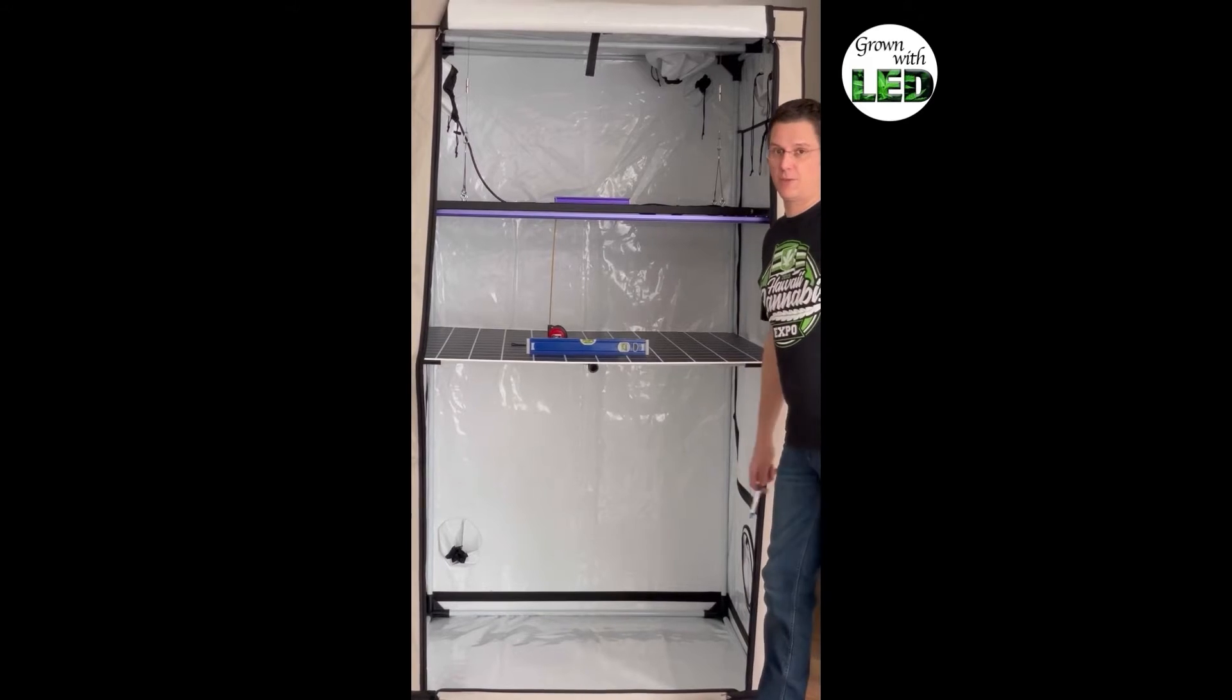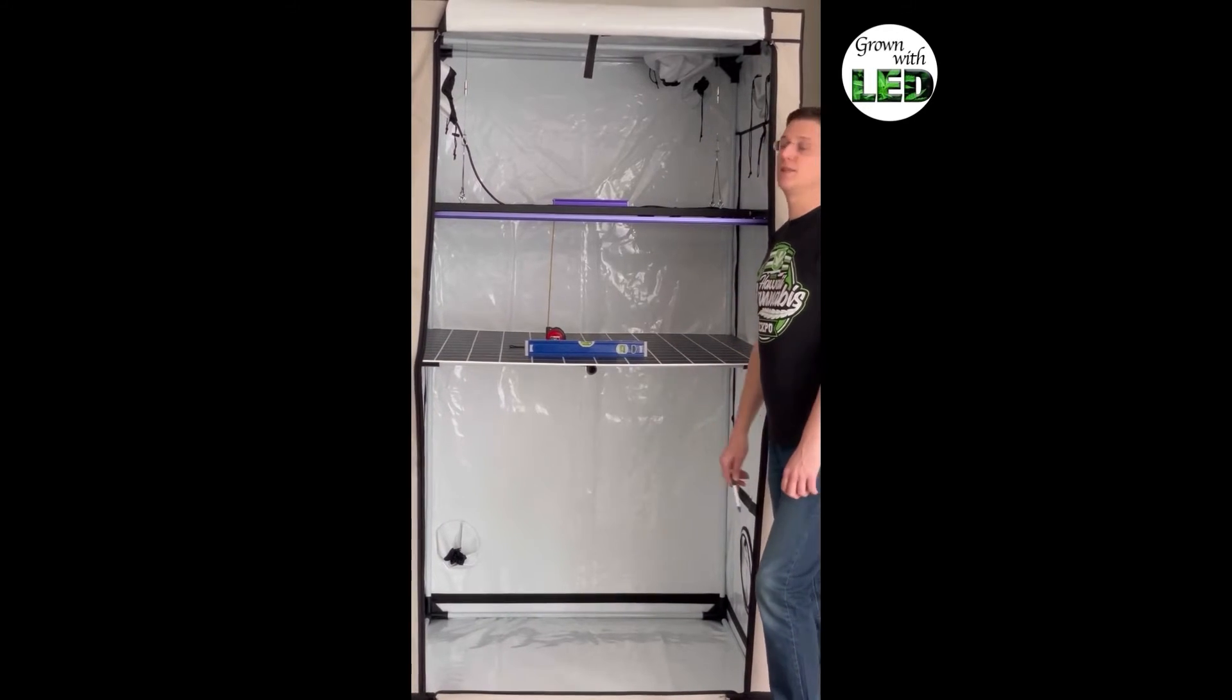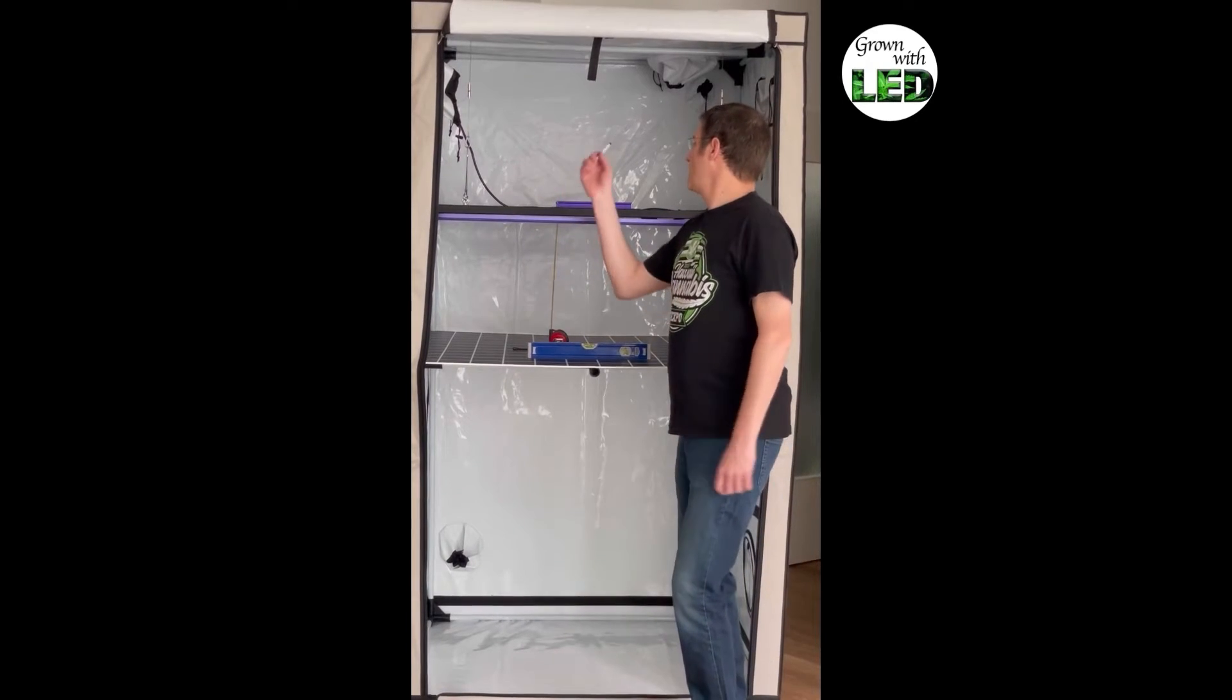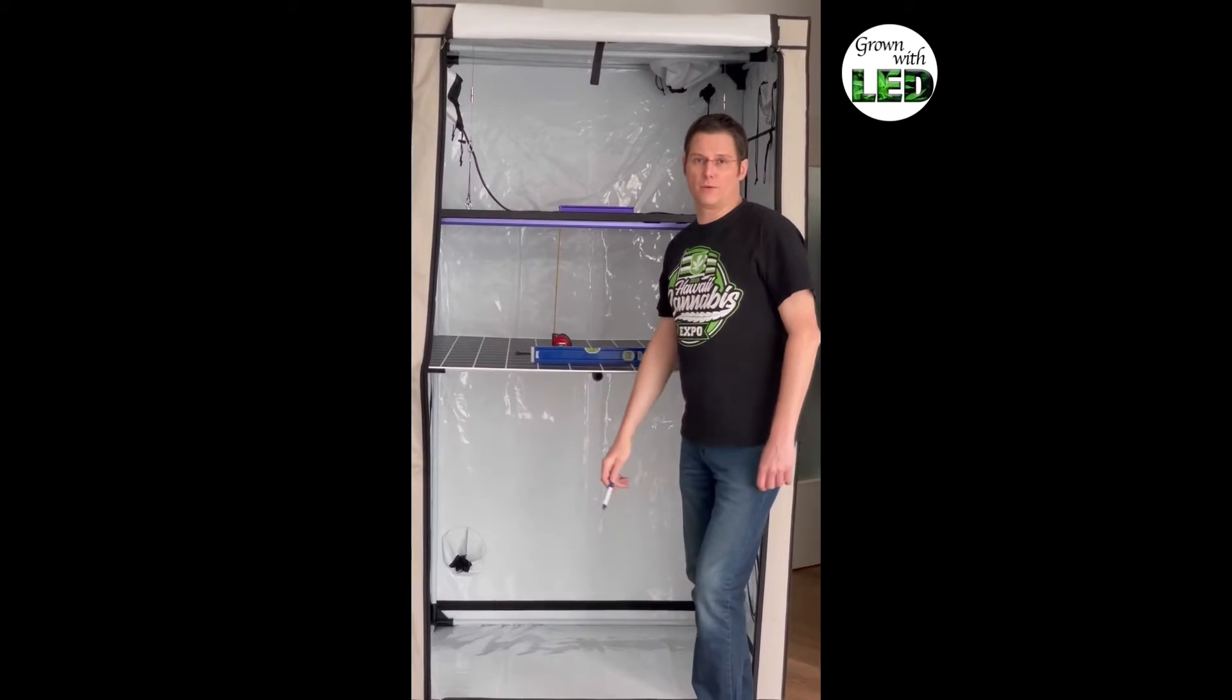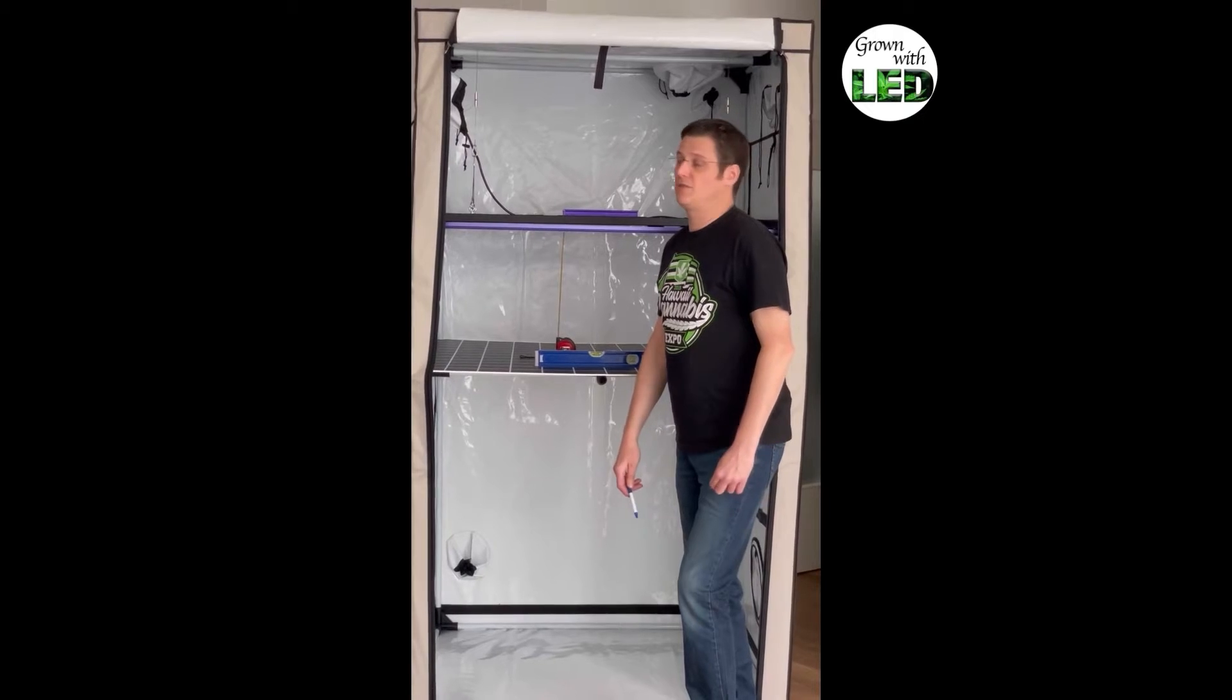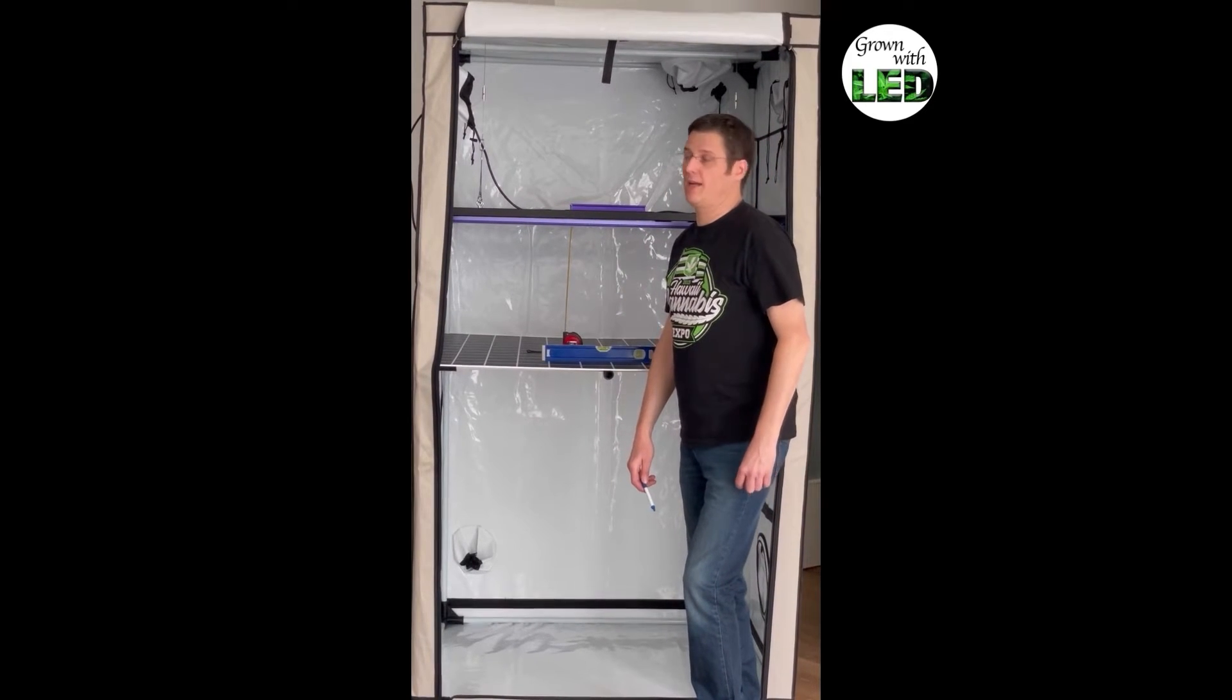And now if you hang up this bigger spider model from the Lumotech in there, it fills out the tent totally. It has barely any distance to the sides, and about an inch of distance to the back wall and the front wall. So this light will probably be very evenly distributed because it's all over the whole canopy, all over the area in the tent.